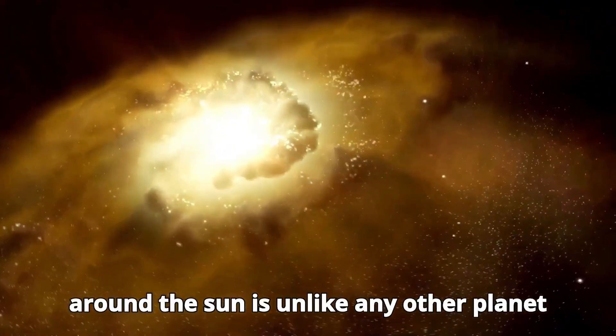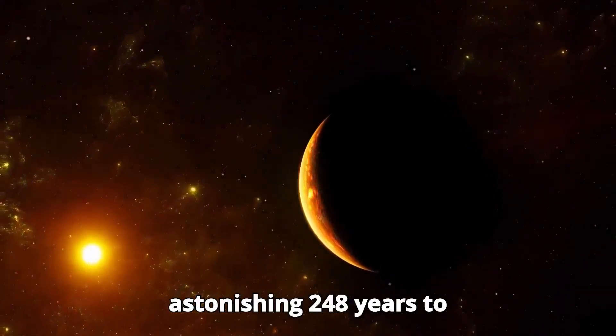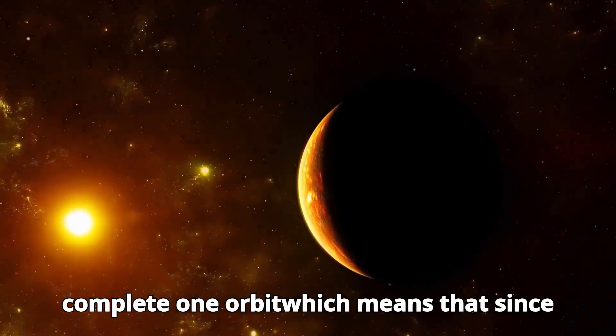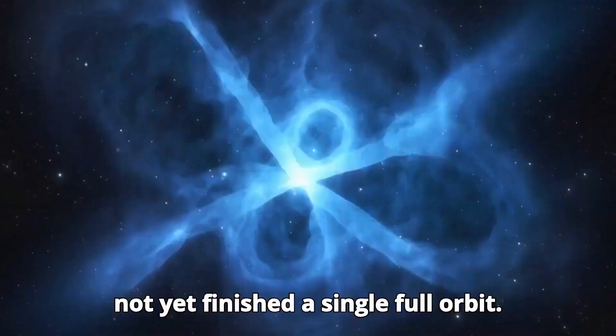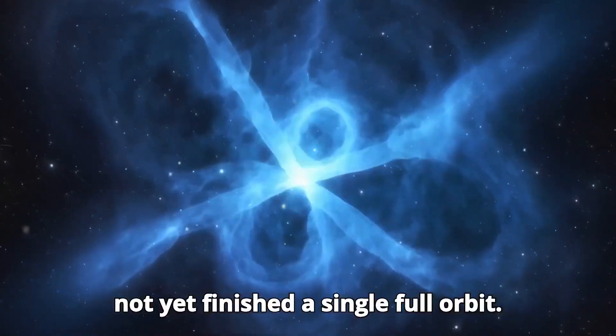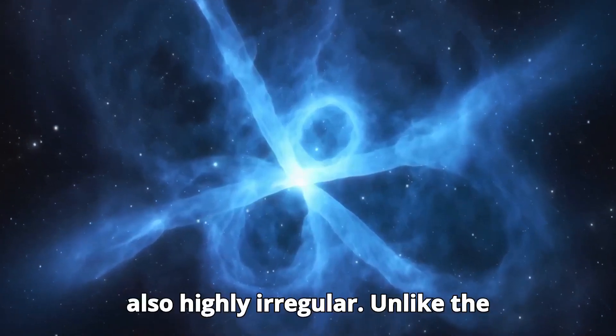But how is this possible? Pluto's orbit around the Sun is unlike any other planet in our solar system. It takes an astonishing 248 years to complete one orbit, which means that since its discovery in 1930, Pluto has not yet finished a single full orbit. But Pluto's orbit isn't just slow, it's also highly irregular.